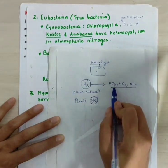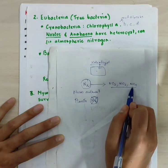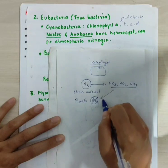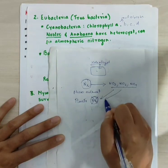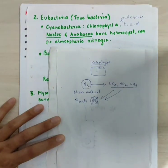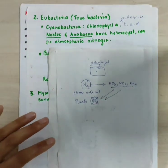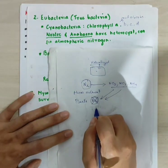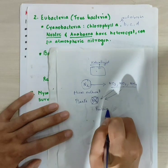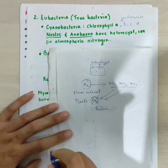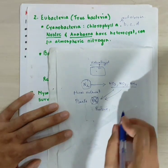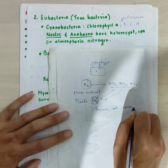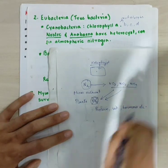Atmospheric nitrogen is fixed into NO3, NO2, and NH4. These are the available forms for plants. Nitrogen is a micronutrient for plants — plants need nitrogen but cannot directly use atmospheric nitrogen. It is required for the synthesis of protein, vitamins, and phytohormones.